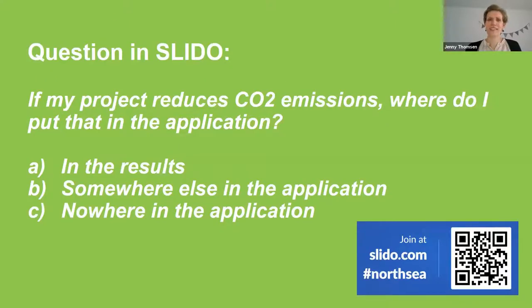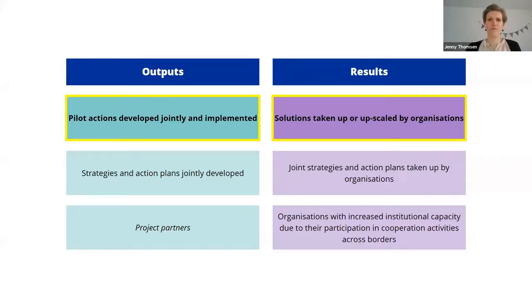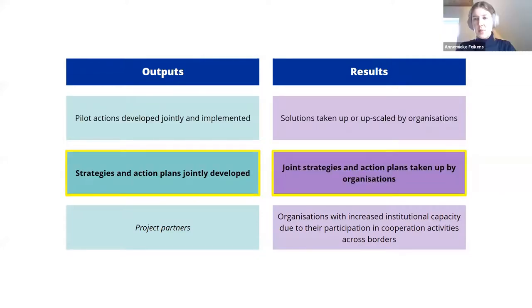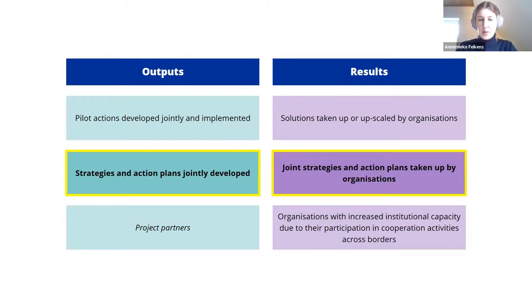When we look at the first set of indicators in the first row of the table, you can see that the output shows the number of pilots — so you have to define the number of pilots in each work package. Afterwards, when you get to the results, you measure how many solutions have been taken up as a result of the project's activities. For the second set, the output indicator measures the number of strategies and action plans jointly developed in the project, while the result indicator measures the joint strategies and action plans that are taken up by organizations. There is a clear link between those indicators.